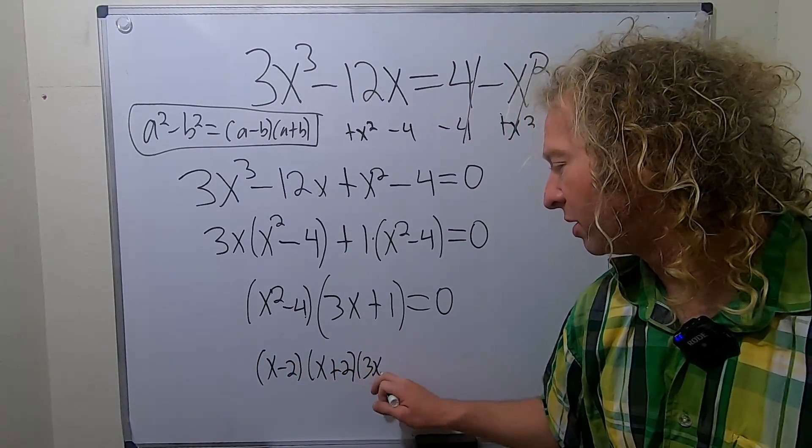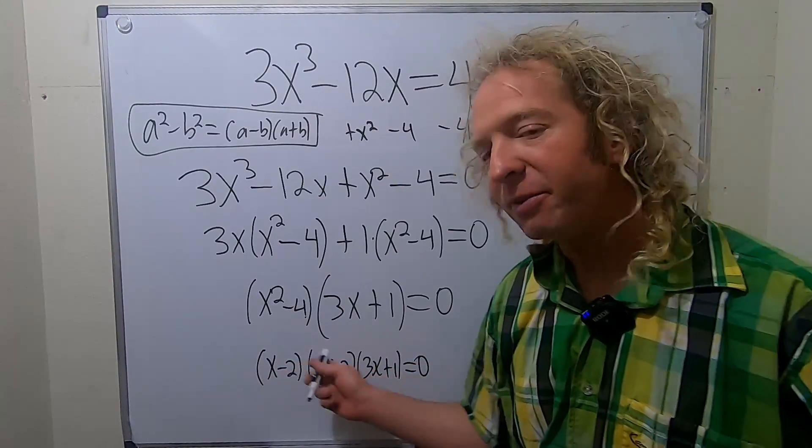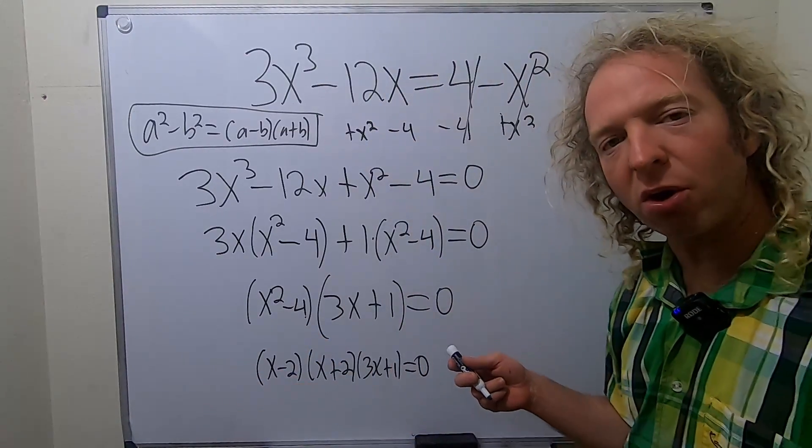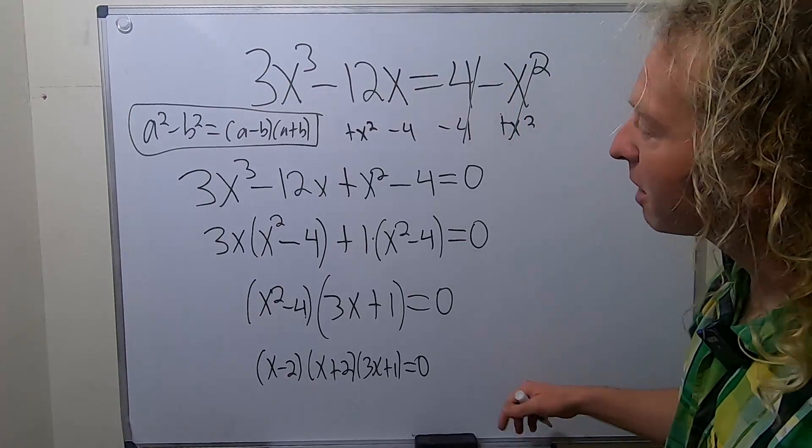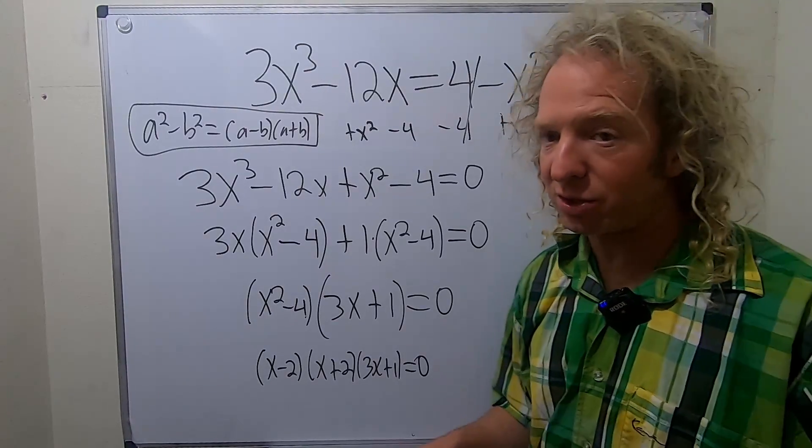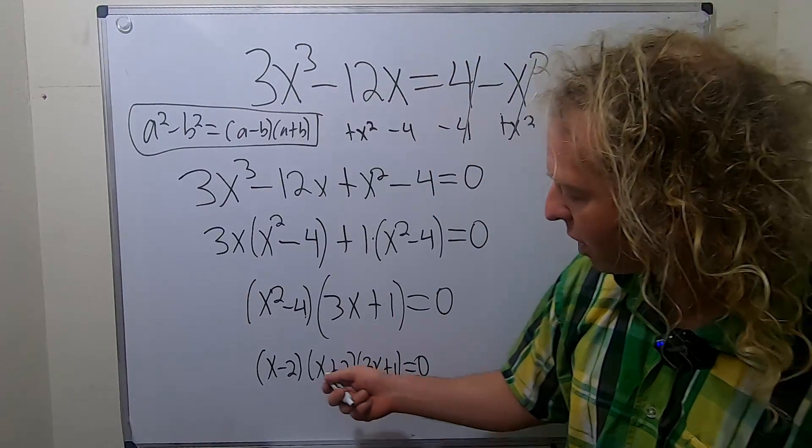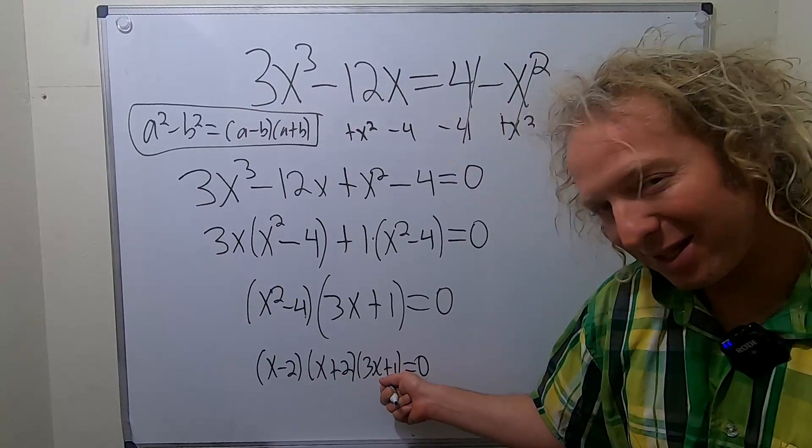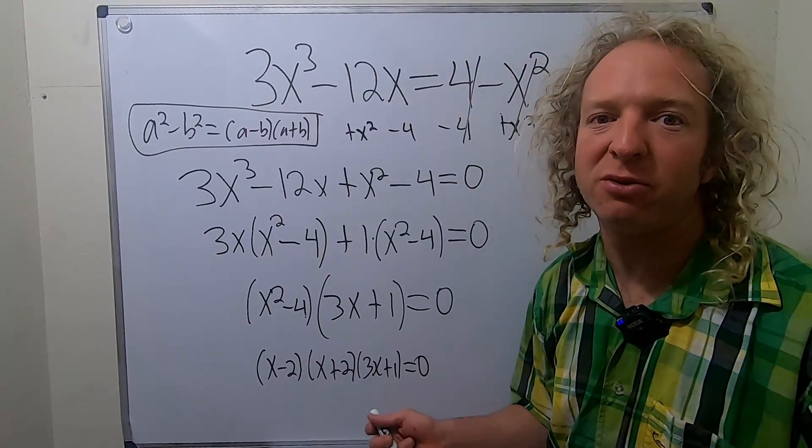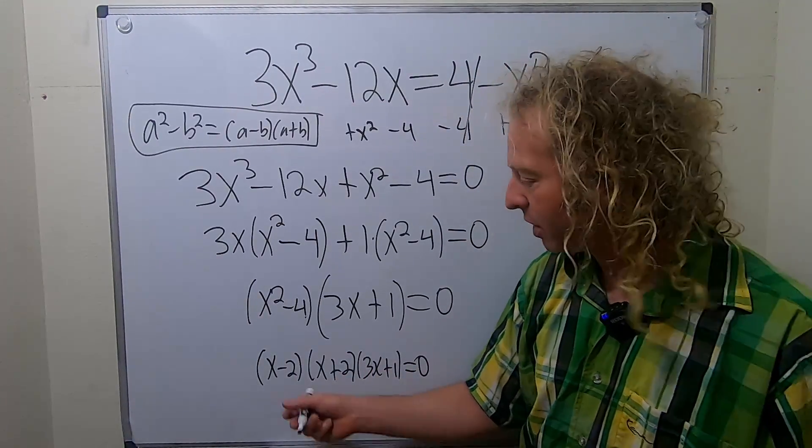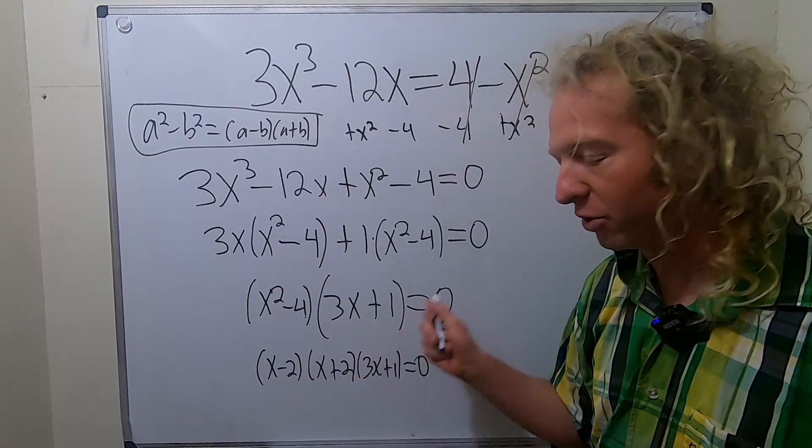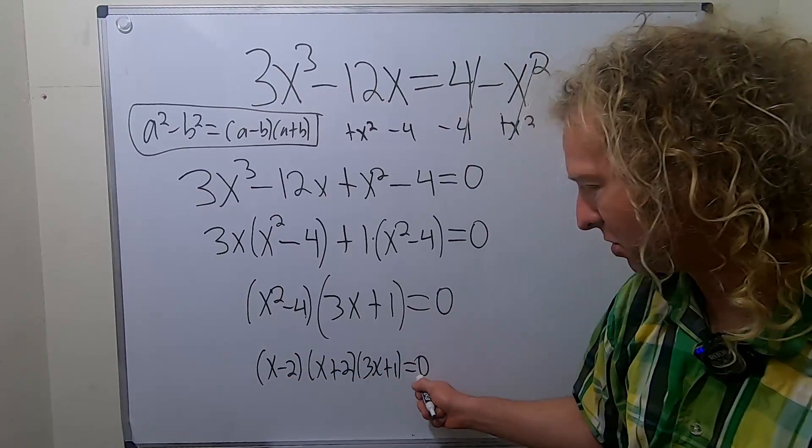3x plus 1 equals 0. All right. So now from here, we can get the answers. But I'm actually going to show the next step, which a lot of people don't actually show. So whenever you have a product like this, and it's equal to 0, now it has to be a 0 here for you to do this. If I have a 1 here, game over. You set each piece equal to 0. You can only do that when there's a 0 here.